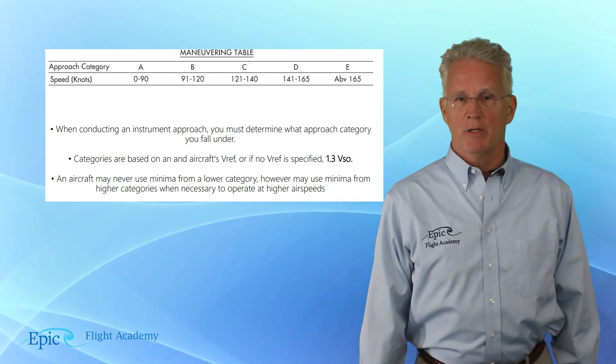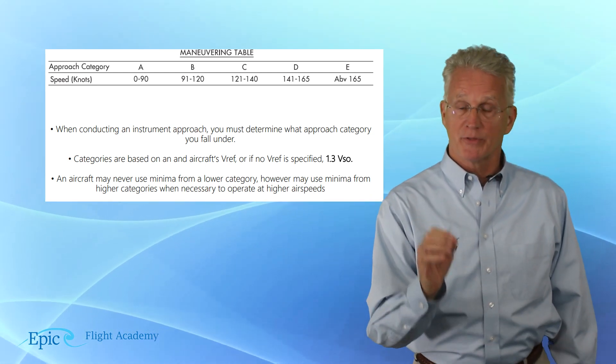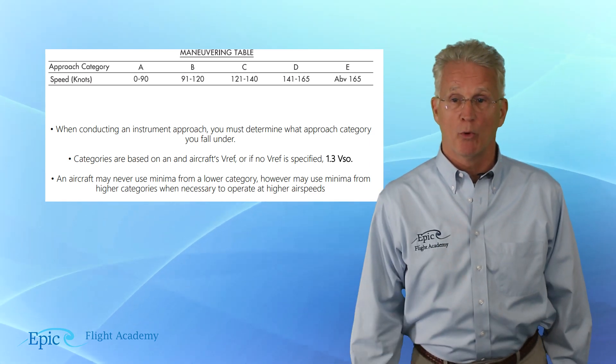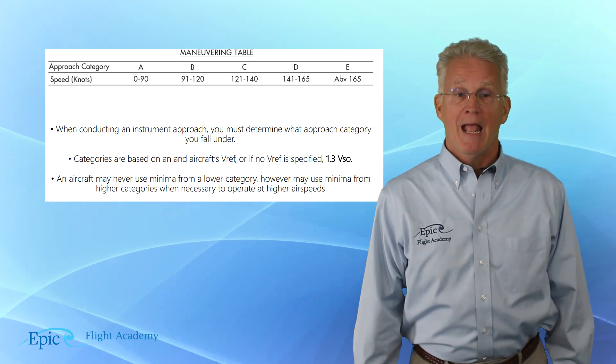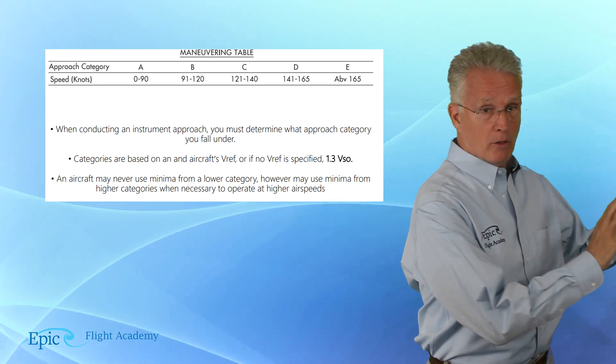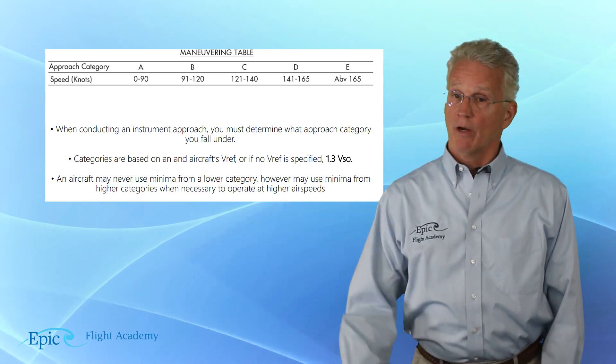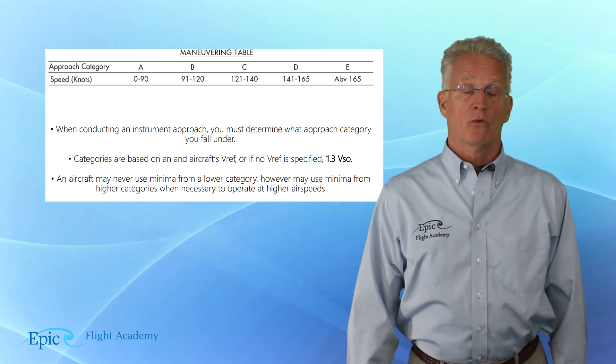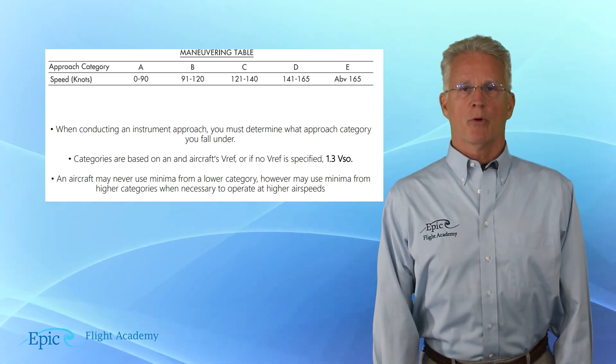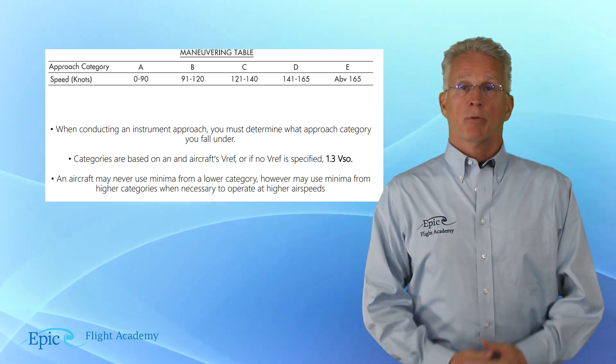So when we are approaching the airport, we have to determine which approach category we are going to be in. Now, these are going to be based on the aircraft's VREF, or if that is not specified, 1.3 VSO. An aircraft may never use minima from a lower category. However, it may use minima from a higher category when necessary to operate at higher approach speeds.